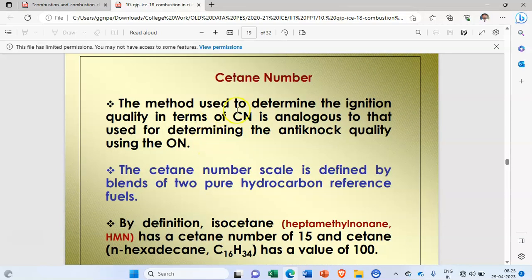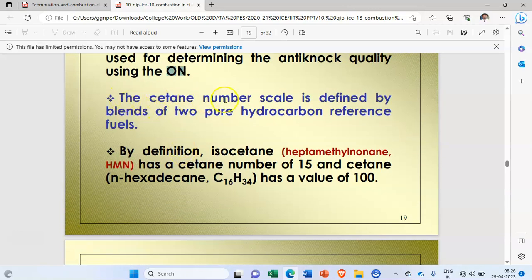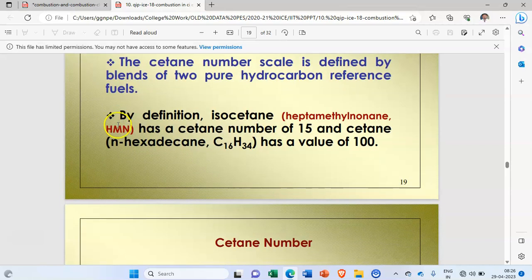What is exactly the cetane number? The method used to determine the ignition quality in terms of cetane number is analogous to that used for determining the anti-knock quality using the octane number. This octane number is used to check the quality of the fuel in SI engine.